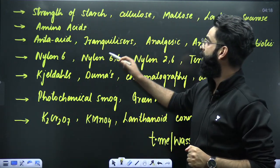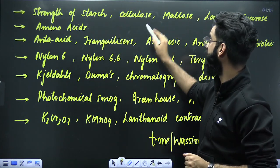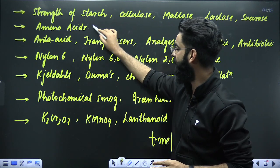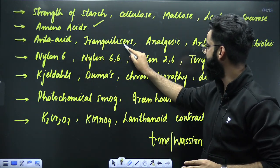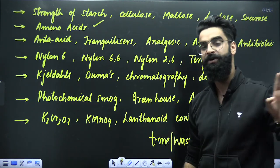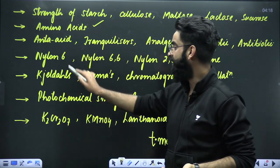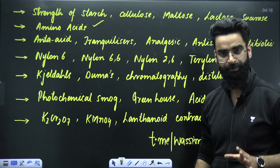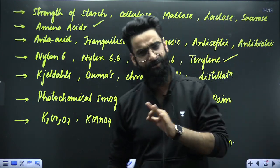You have got the structure of starch, cellulose, maltose, lactose, and sucrose. You have got amino acids. You also have antacids, tranquilizers, analgesics, antiseptics, and antibiotics — questions have been directly asked from your NCERT on these, so do not skip them at all. Also cover Nylon 6, Nylon 6-6, Nylon 2-6, and Terylene — questions will be directly asked from these as well.